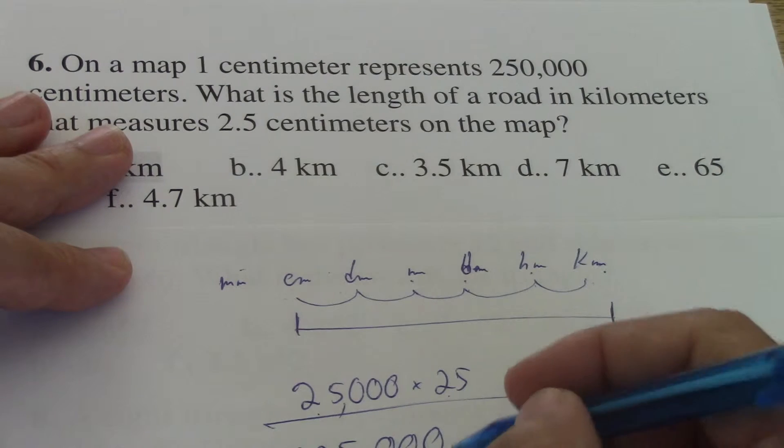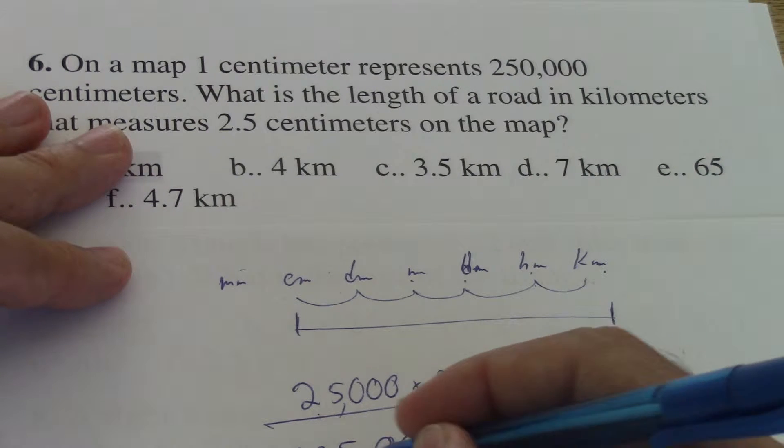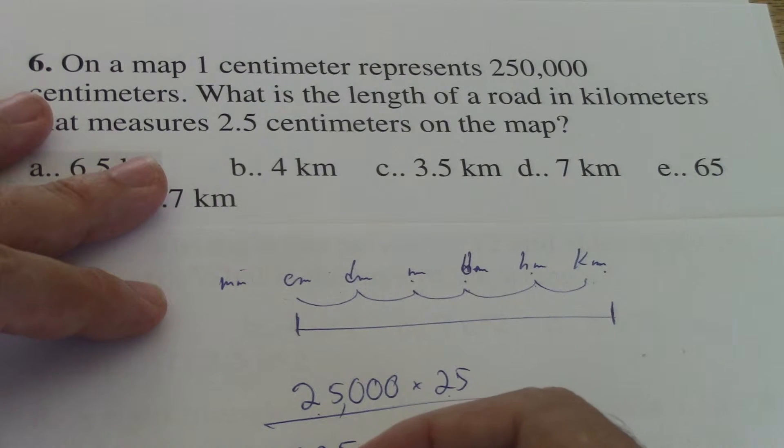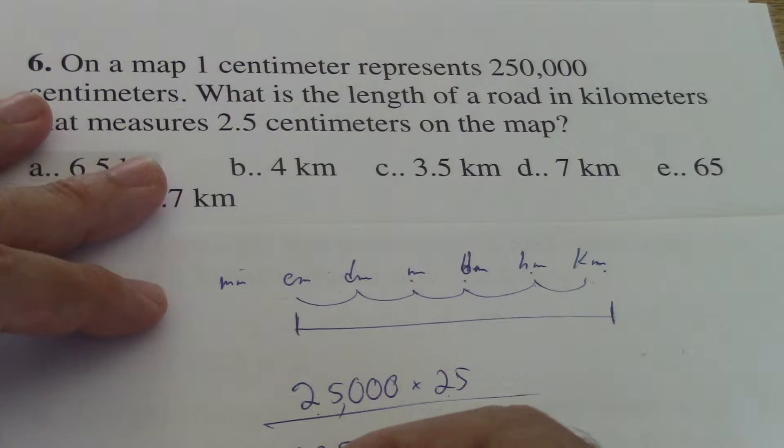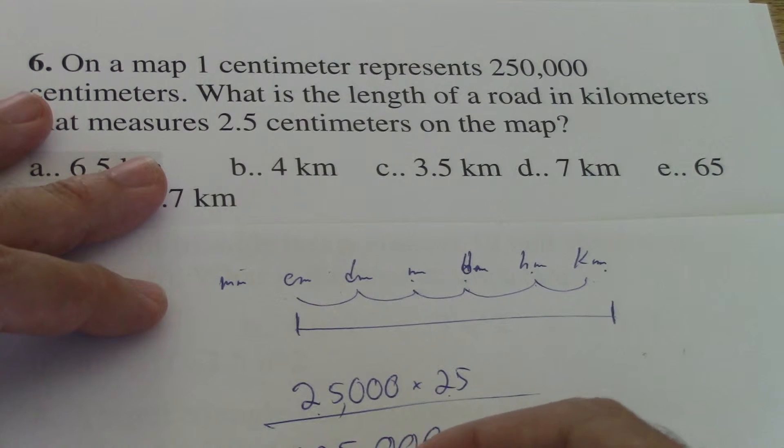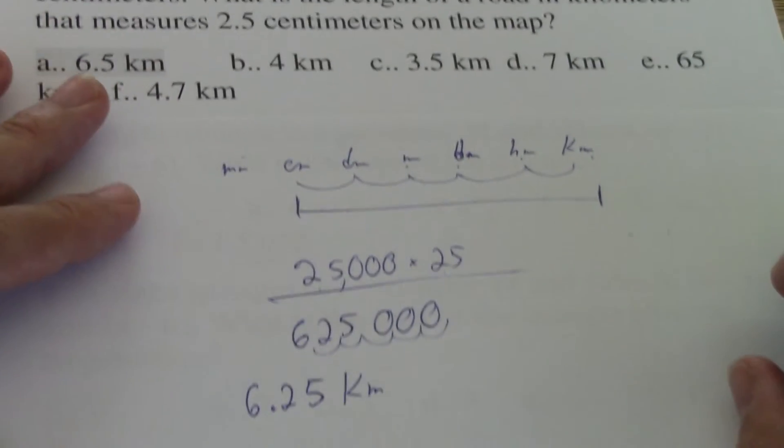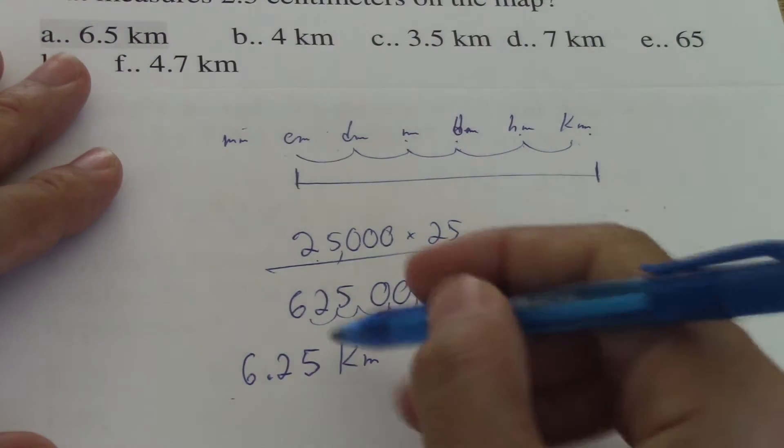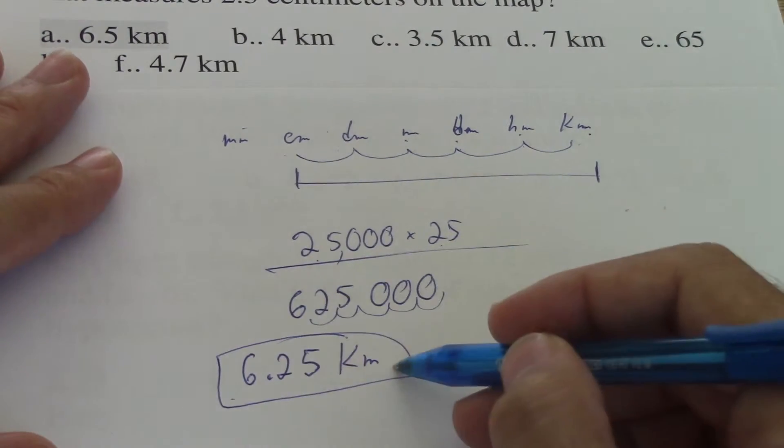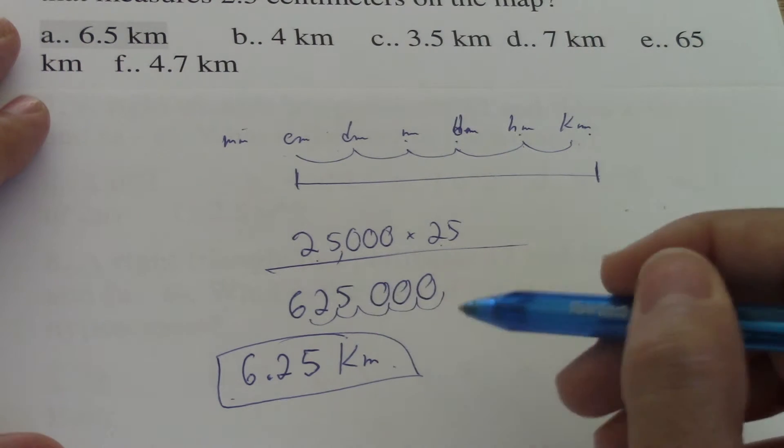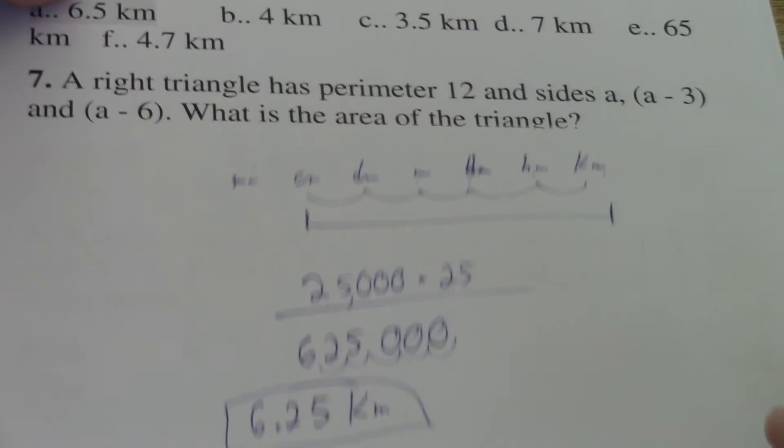So I need to move one, two, three, four, five. So from here, one, two, three, four, five. That would be 6.25 kilometers. 6.25 kilometers is the distance of the 2.5 centimeters on the real map in kilometers. That's basically the answer.